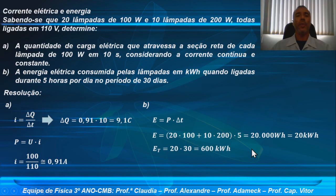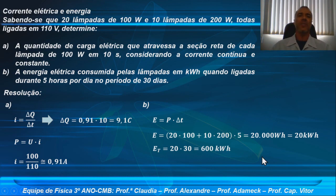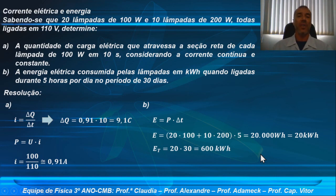Se você sabe qual é o preço do kilowatt-hora, você pode encontrar o preço total que esse circuito consumiu, nesse funcionamento de 5 horas diárias. Basta pegar o preço do kilowatt-hora e fazer uma regra de três simples para encontrar o custo desse consumo de energia. Claro que se você tem mais equipamentos ligados na sua residência, como chuveiro elétrico, geladeiras, televisores e assim por diante, pode encontrar a energia total consumida no mês.